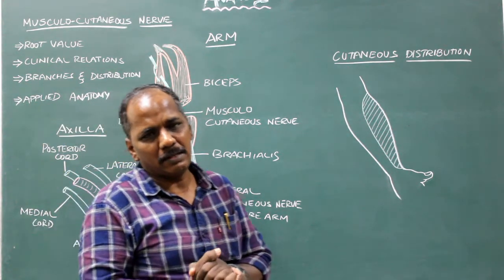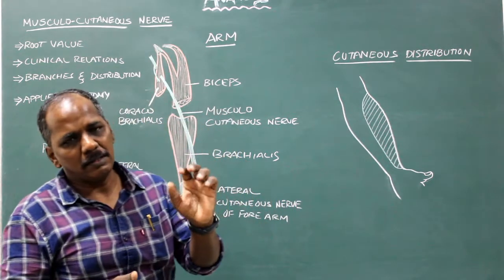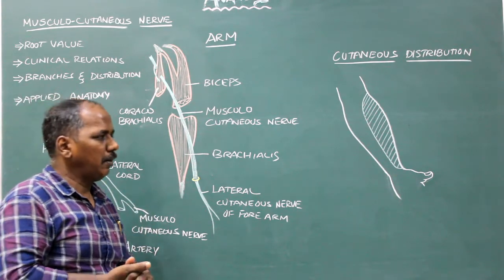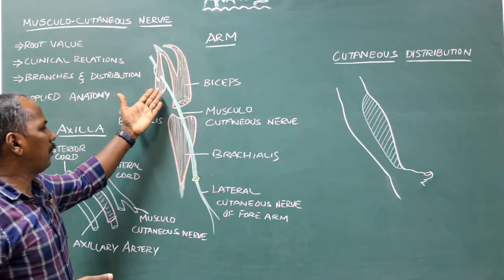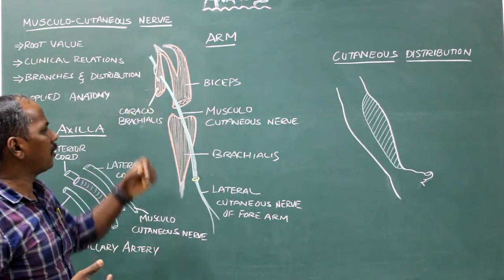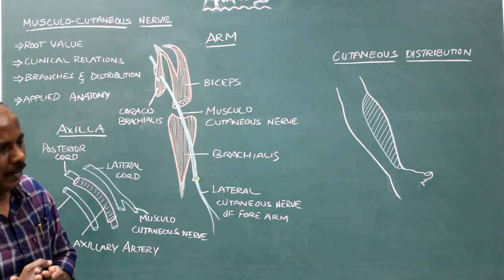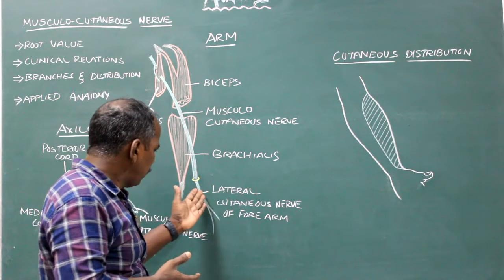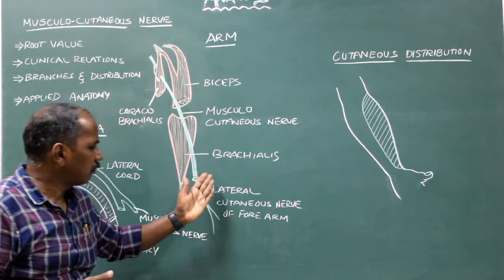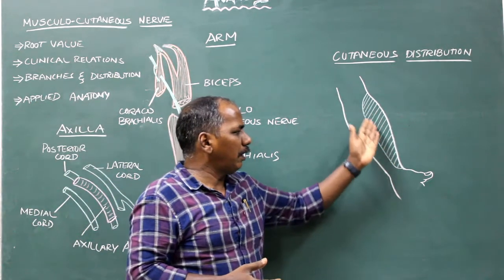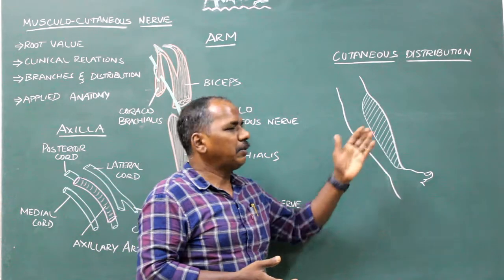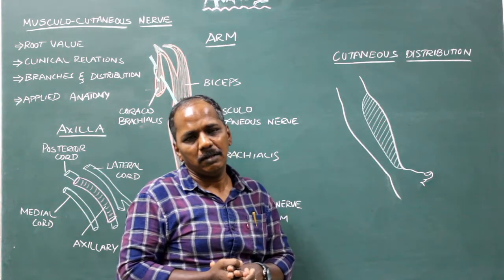Branches and distribution. Articular branch to the elbow joint. Muscular branches to coracobrachialis, biceps, and brachialis — the branch to coracobrachialis arises before the nerve pierces that muscle. Cutaneous branch: the musculocutaneous nerve continues as the lateral cutaneous nerve of the forearm, supplying the skin over the lateral part of the anterior surface of the forearm.